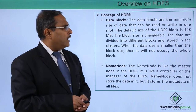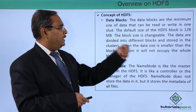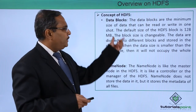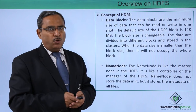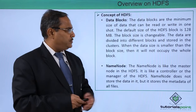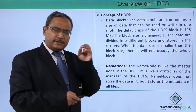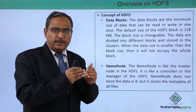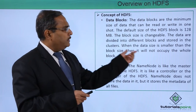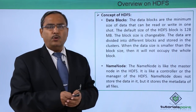What is a data block? Data blocks are the minimum size of data that can be read or written in one shot. The default size of the HDFS block is 128 MB. The block size can also be changed. The data are divided into different blocks and stored into the clusters. If certain data is less than 128 MB, the block will not get filled up — the rest of the space will remain free. When the data size is smaller than the block size, it will not occupy the whole block.